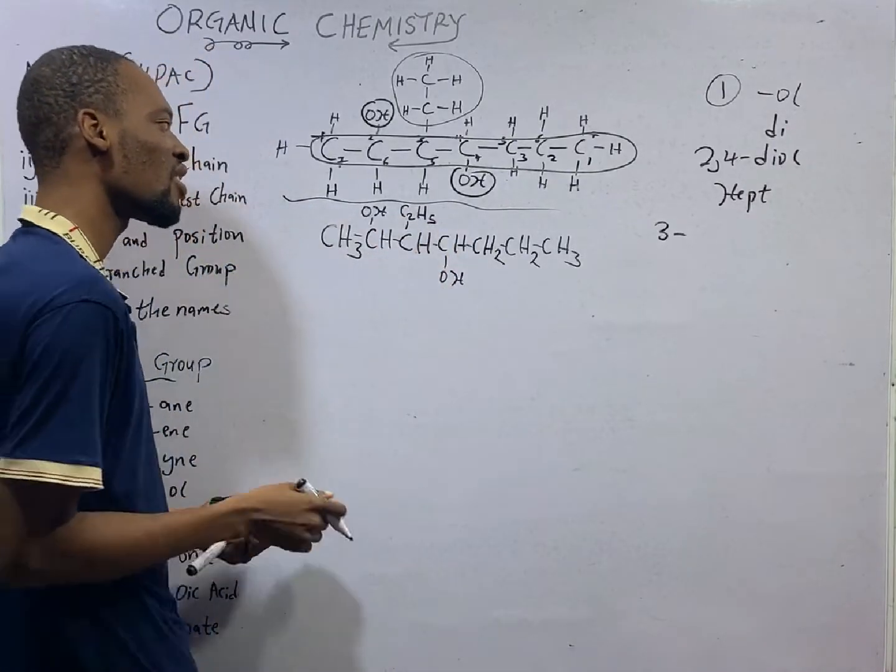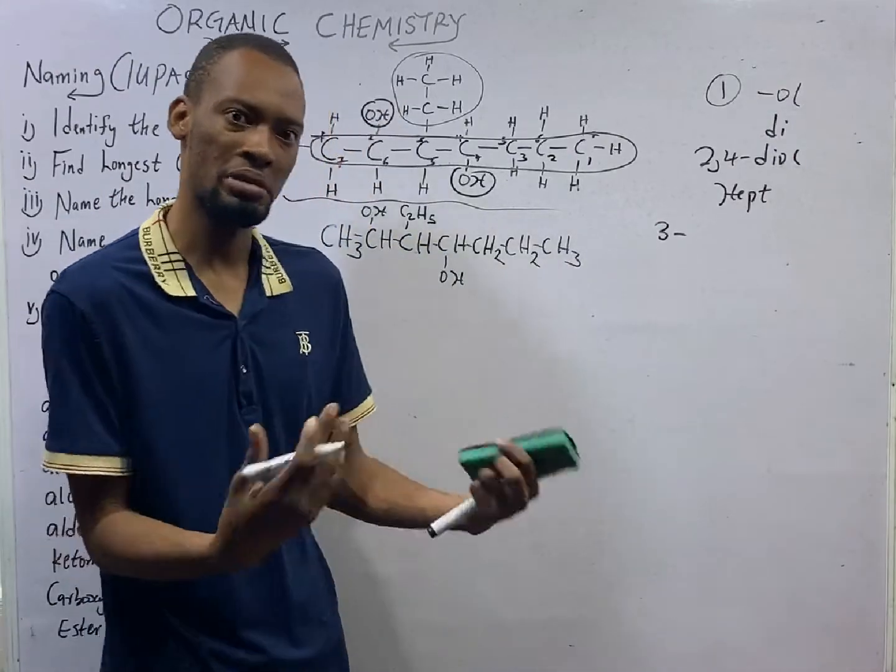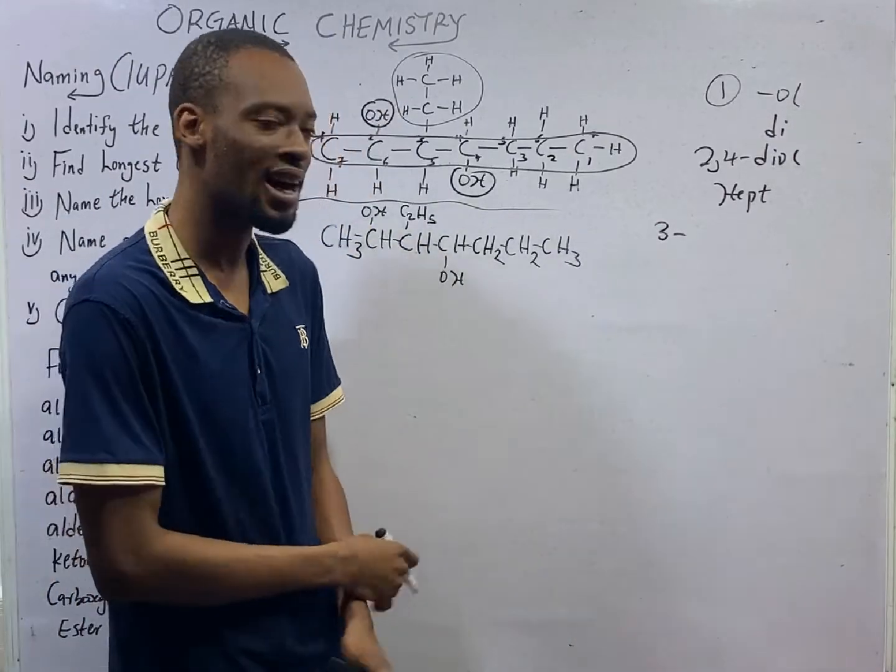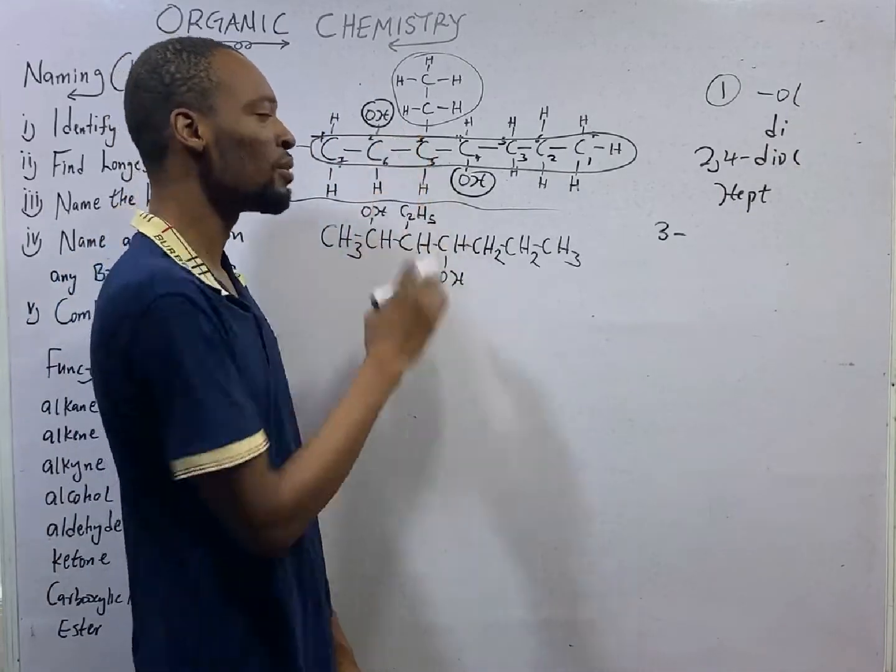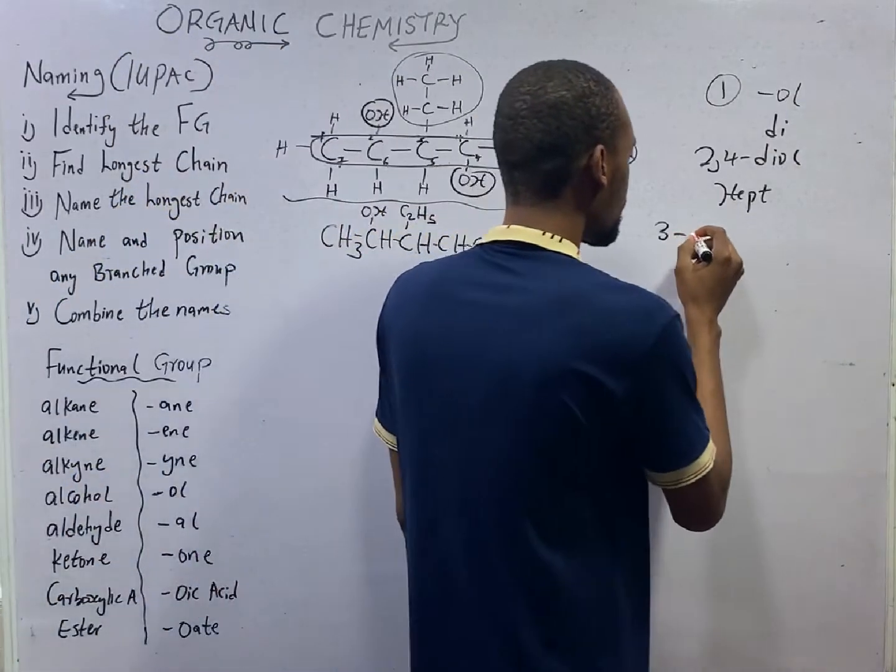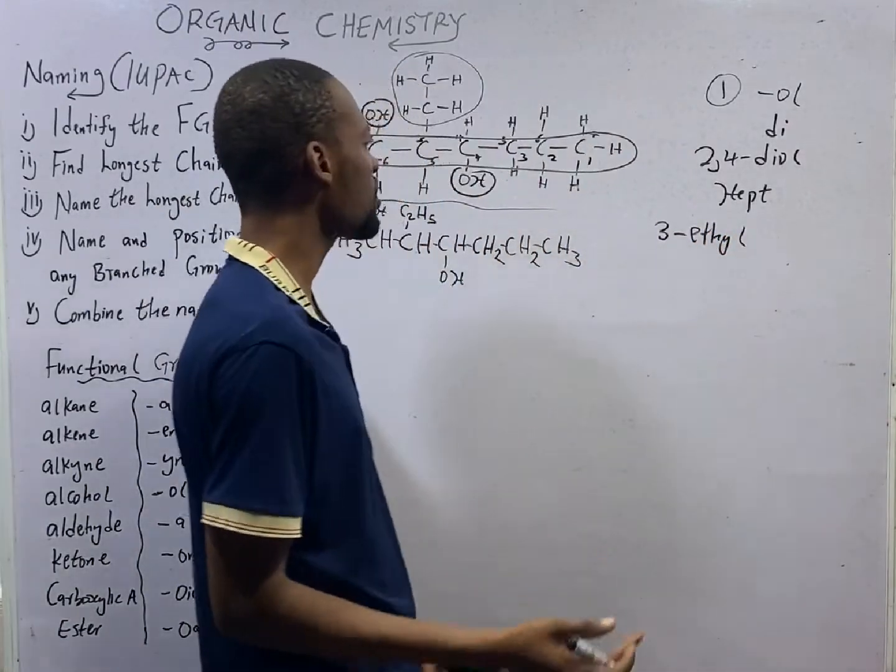This is C2H5, that is ethyl. All those hydrocarbon branches are usually the methyl group, ethyl, methyl, propyl and isobutyl. So the ethyl is on carbon 3. So 3-ethyl. Not too much to see.